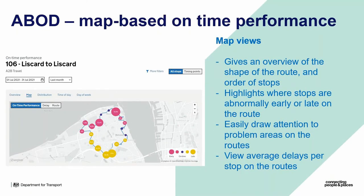We also introduced at the beginning of last month the map-based on-time performance feature. You'll find this at line level — go into the operator, click on the line you'd like to look at, then click on Map. This gives you an overview of the shape of the route and the order of stops. It highlights where stops are abnormally early or late on the route, drawing your attention to areas which could be more of a problem compared to those displayed as on time.